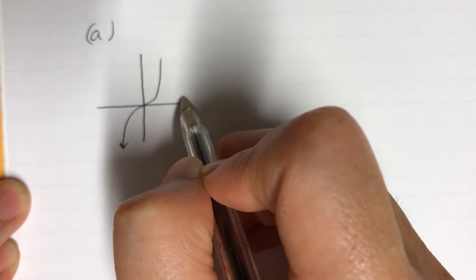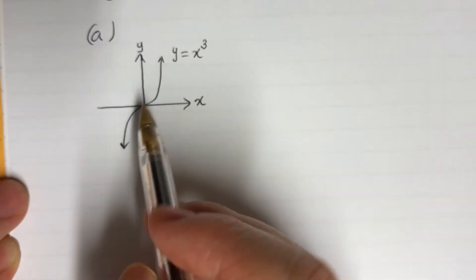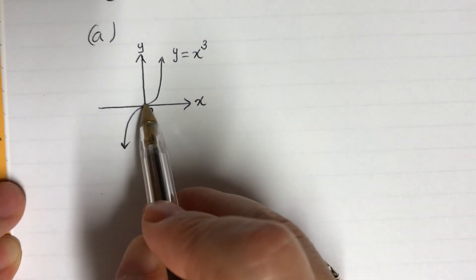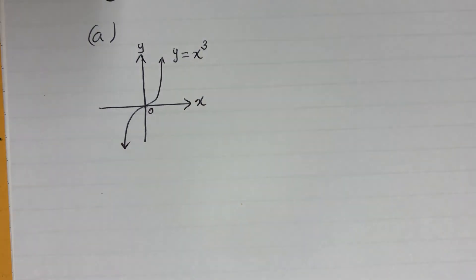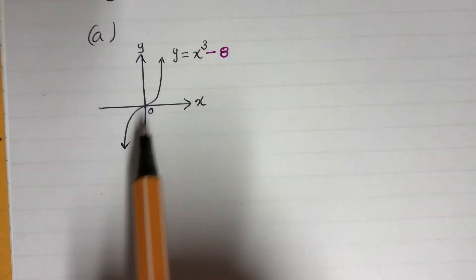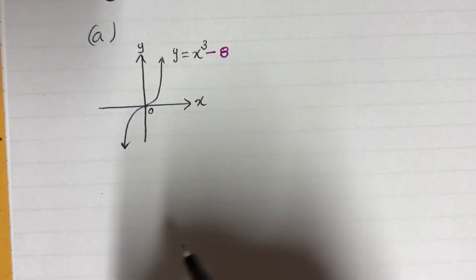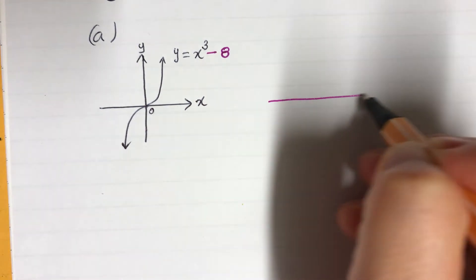This is our classic graph of cubic, y equals x cubed. From zero, I'm going to bring the whole thing down to negative 8, right there. I'll sketch it here.